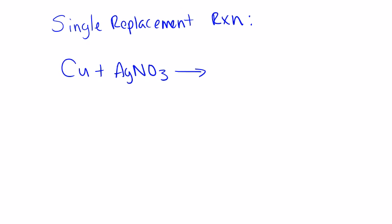Starting with a single replacement reaction, we have one given to us here. Sometimes they're given to you in formula form, other times in words and you're going to have to name them yourself. In this case, I gave you the formulas and you need to be able to recognize this equation as a single replacement. When we see these reactants, we notice that there is a copper which is all by itself — we call this a free element. And we also have a compound.